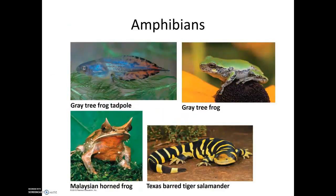The next group of animals that we'll talk about are the amphibians. Amphi means two, or double, or both, whereas bio in this case is referring to life. So the amphibians live two lives — one within water and one outside of water. They're given this name because they can live both on land and in water. Sometimes it will be different stages of the amphibian's life in which they live in one domain or the other, so typically the juvenile stage takes place within the water, whereas the adults can leave the water.